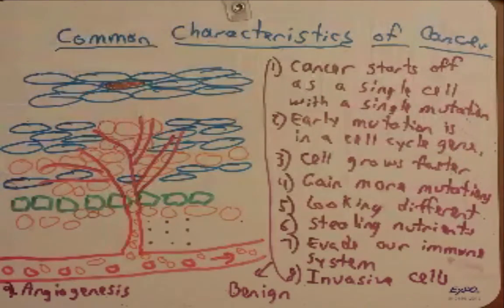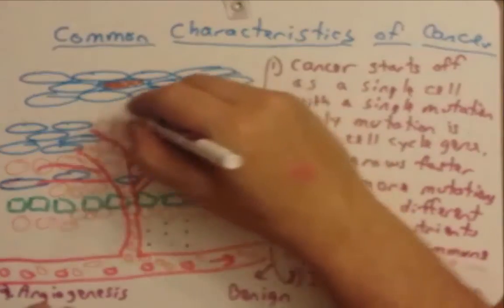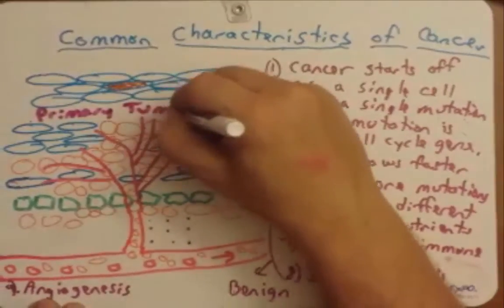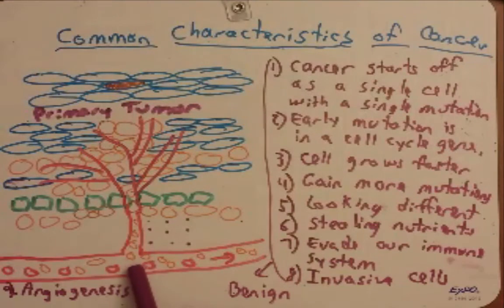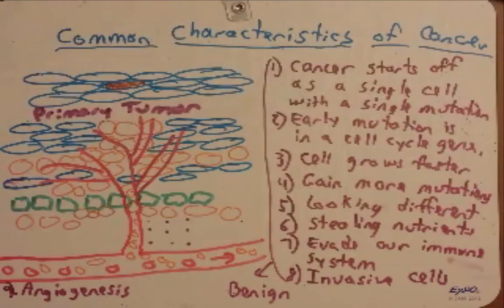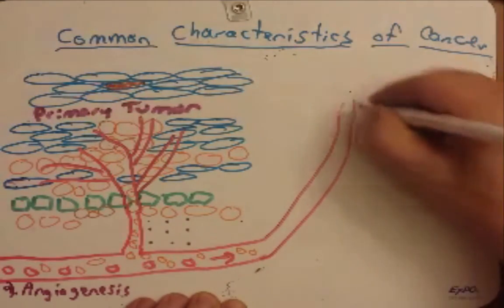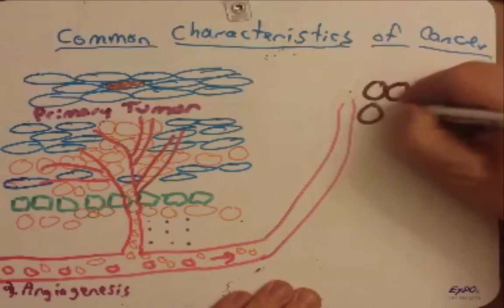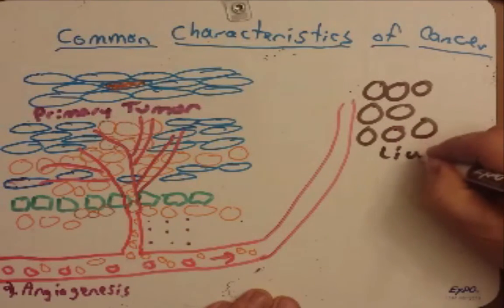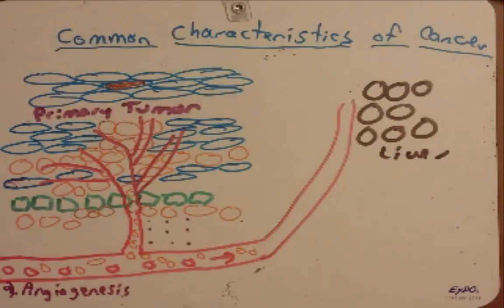We should call this what it is. This here is our primary tumor. This is where the cancer started. The cancer cells enter into the blood vessels because of angiogenesis and leave. Now they can go to other parts of the body and set up a secondary tumor. Maybe this is the liver, and maybe over here was lung tissue.